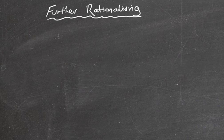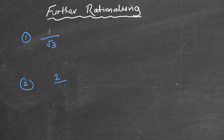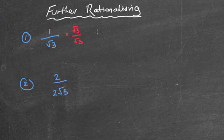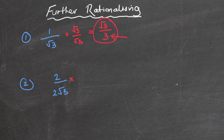Hi guys, welcome to today's lesson. We're looking at some further rationalizing - this has been a request. Just to recap, we were looking at questions such as one over root three. We times the top and the bottom by root three. If we times the top and bottom by the same number, we don't actually change the value of the fraction, just the way it looks. We want a rational number on the bottom. Expanding: one times root three is root three, and root three times root three is positive three. So the denominator is now rationalized.